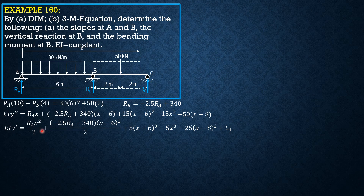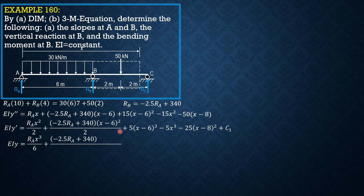After we integrate again, there is no C sub 2 because when X is 0, Y is 0 at A. Integrating again: EI Y equals RA X cubed over 6, plus (negative 2.5 RA + 340) times (X minus 6) cubed over 6, plus 1.25 (X minus 6) to the 4th, minus 1.25 X to the 4th, minus (25/3)(X minus 8) cubed, plus C sub 1 times X.